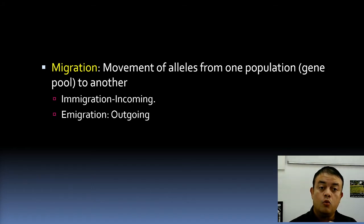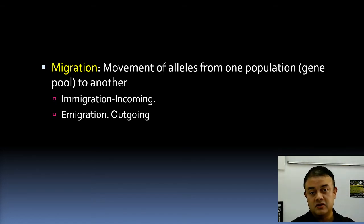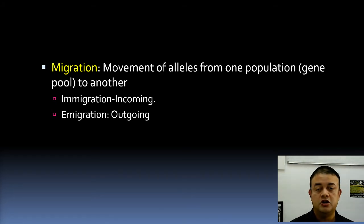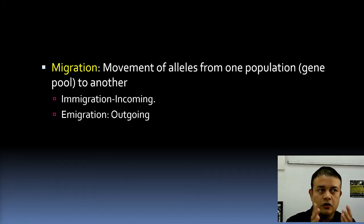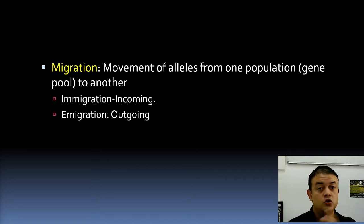Finally, migration is the movement of alleles from one population to another — or from one gene pool to another. Think of a gene pool as a virtual bucket holding all the genes of a population. Migration, like migratory birds moving from one location to another, brings alleles from one population to another. Whether it is called emigration or immigration depends on your perspective.